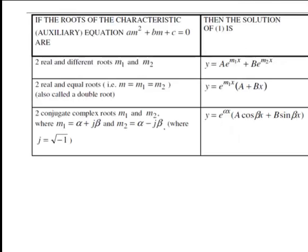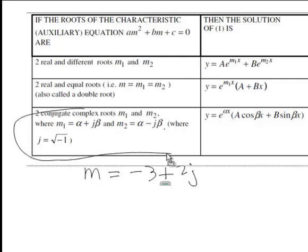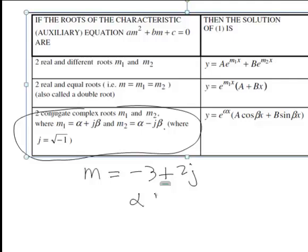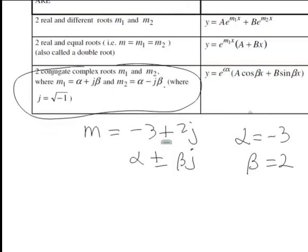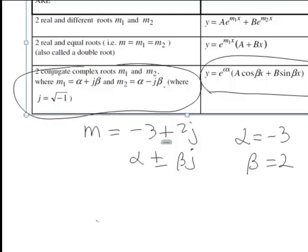Now we need to look at the form of the roots of our auxiliary equation. So we saw that these are of the form m equal to negative 3 plus or minus 2j. So this is an example of two complex conjugate roots of the form alpha plus or minus beta j. And that means in this case alpha is the real part of this complex number. So alpha here is negative 3 while beta is 2.